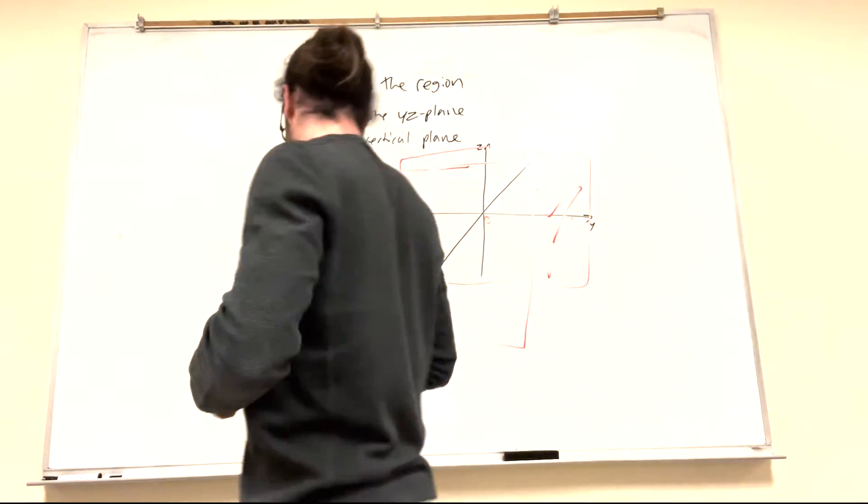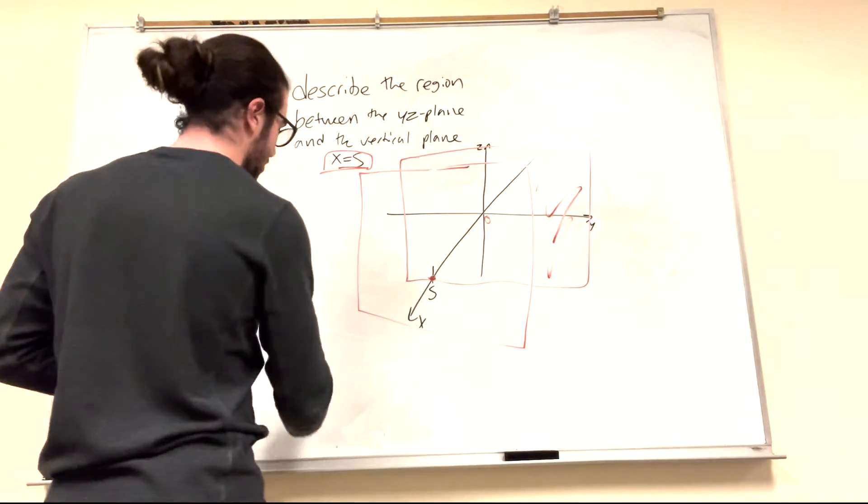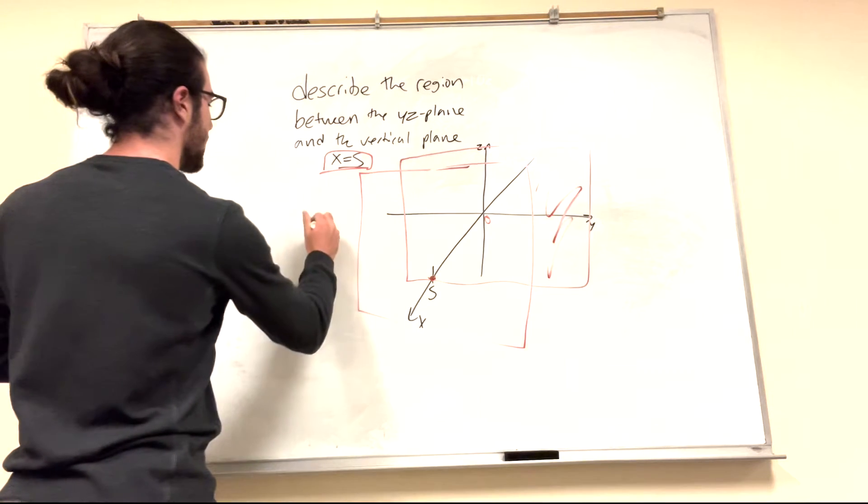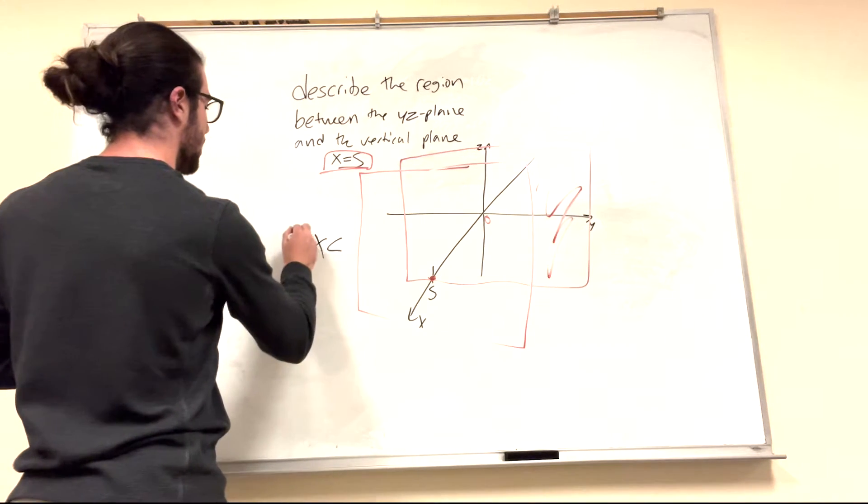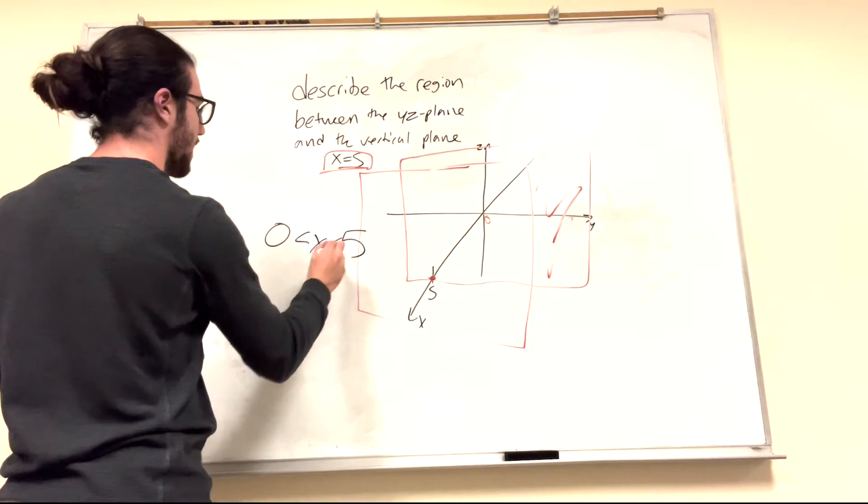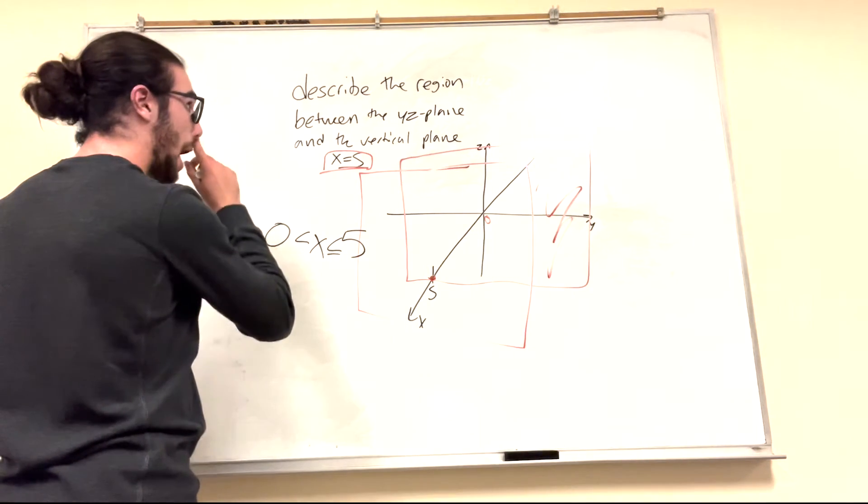Simply, it's going to be x is greater than 0, but less than or equal to 5. Right? Yep.